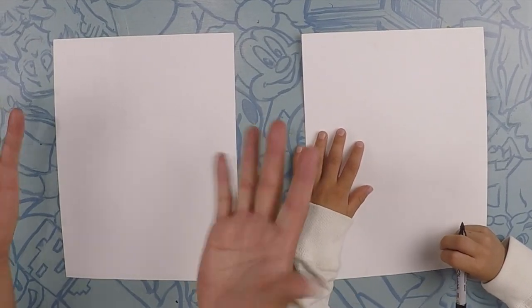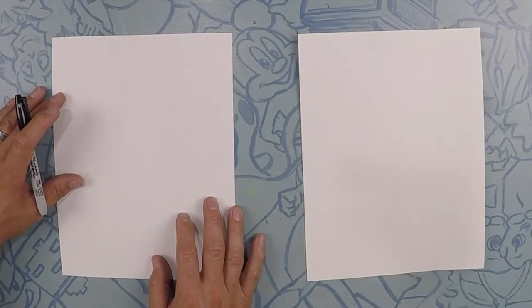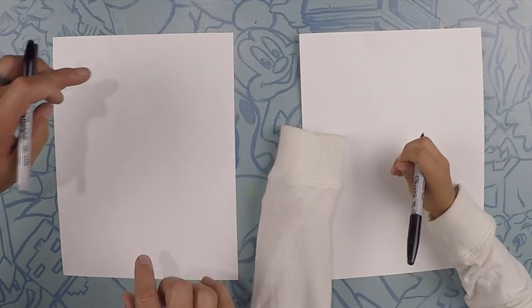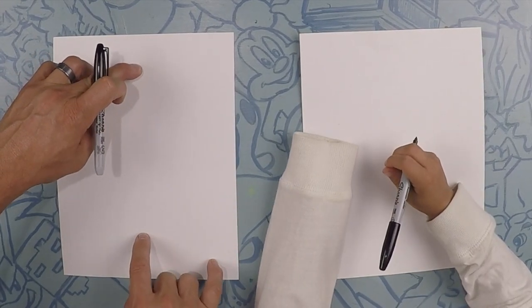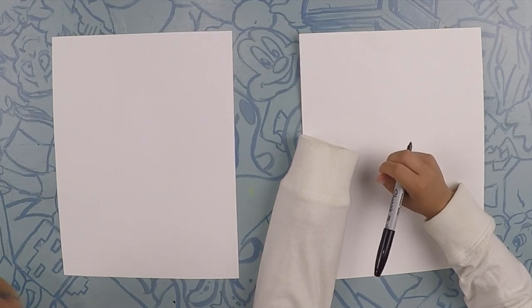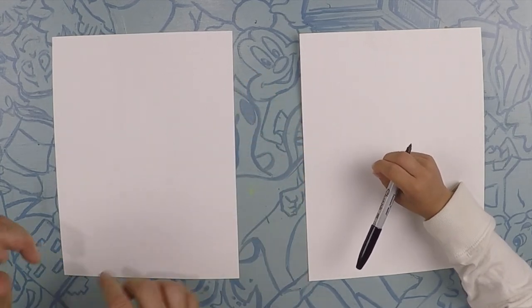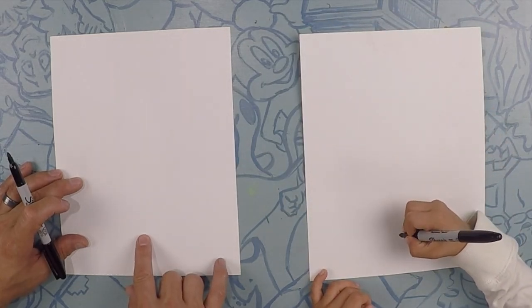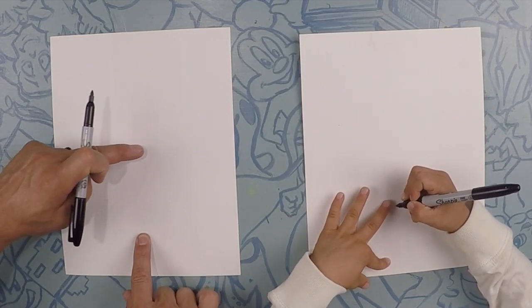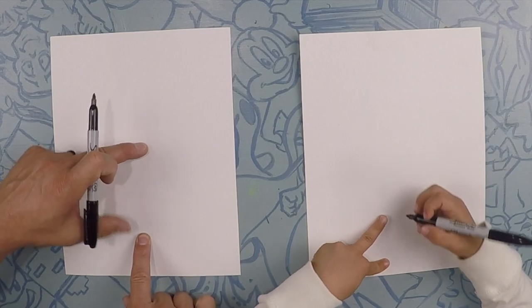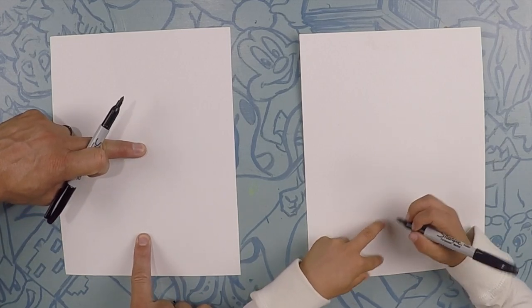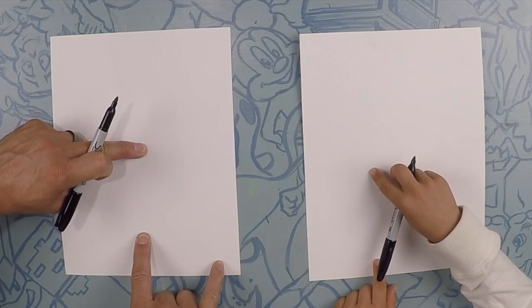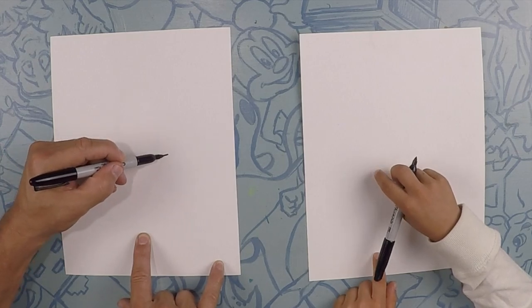Alright, so here we are drawing our creepy haunted house. Are you ready? Yep. So our haunted house is going to take up almost the whole page. Alright, pen's ready. So we're going to start here from the bottom and we're going to move up about right here. What we're going to do is we're going to draw a square about this big from here to here. Yep, so draw a square the best you can.